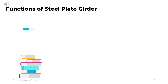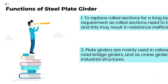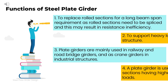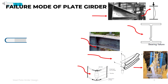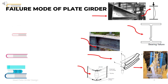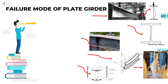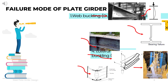A plate girder is a steel beam that is widely used in bridge construction, required to carry heavy loads on relatively long spans. Plate girders are commonly used as long-span floor girders in buildings, in railway and road bridge girders, and as crane girders in industrial structures.